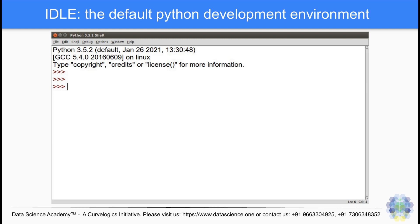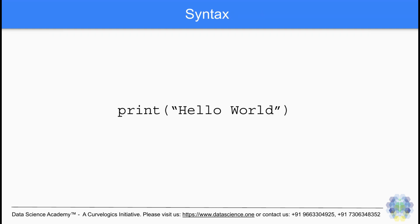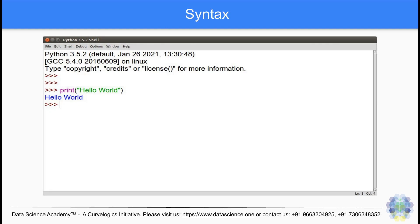Let us start our Python programming journey with the tradition of printing out hello world, like when you learn any new programming language. To print hello world, we use the print function with the argument hello world enclosed in single, double, or triple quotes. Single, double, or triple quotation marks are used to specify a string, details of which will be covered later in this Python programming video series.